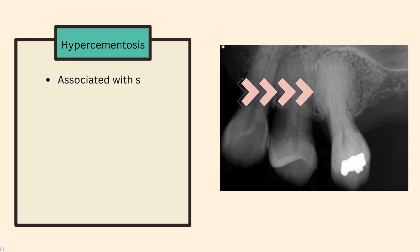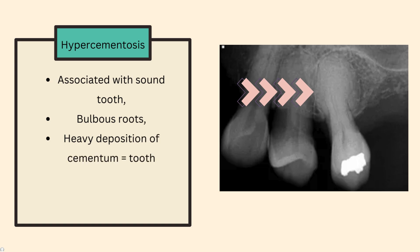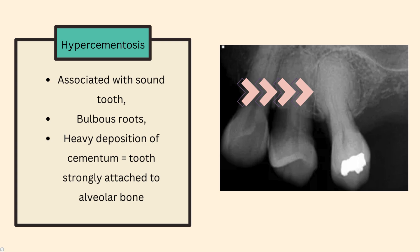What about hypercementosis, also known as cemental hyperplasia? It is associated with a sound tooth — not a carious tooth. As you can see in the periapical x-ray, the tooth is sound with no caries. Number two is bulbous roots. As you can see, there is radio opacity surrounding the roots, and the roots are large due to heavy deposition of cementum.